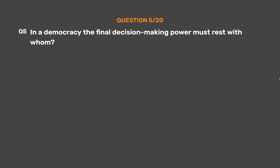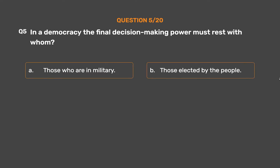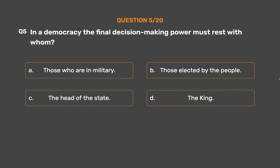Question number 5. In a democracy the final decision-making power must rest with whom? Option A: Those who are in the military. Option B: Those elected by the people. Option C: The head of the state. Option D: The king.